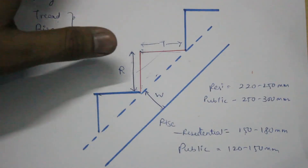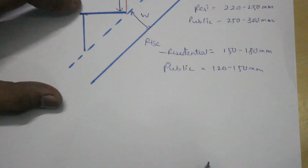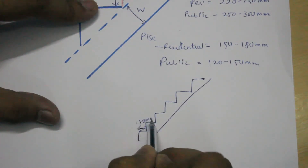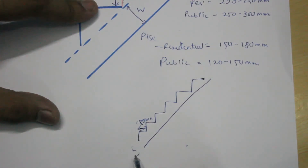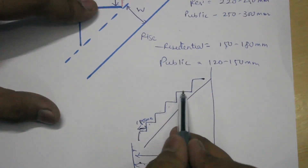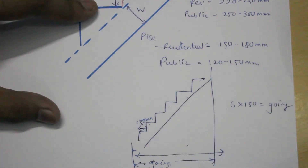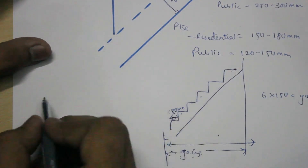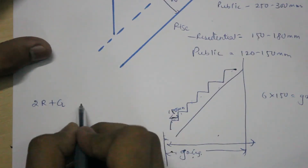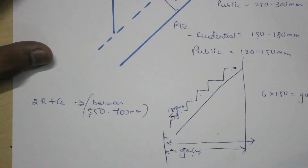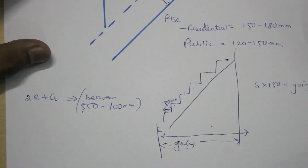There is one empirical formula used to decide the number of risers and number of treads. The going is the total horizontal distance — it is calculated as the number of treads multiplied by the size of one tread. To adjust the number of risers and treads, the National Building Code gives the formula: 2r + g should be between 550 to 700 mm.